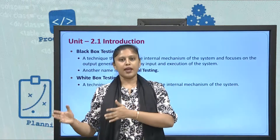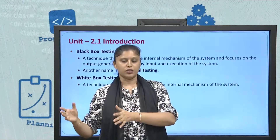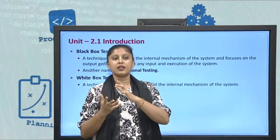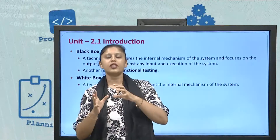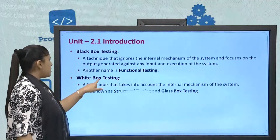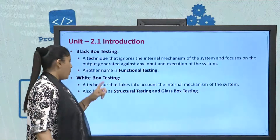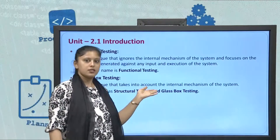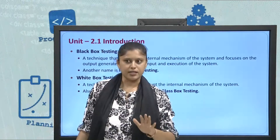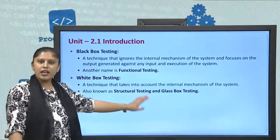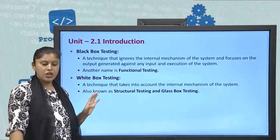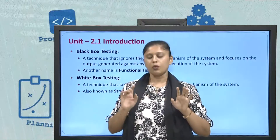The major difference between both types of testing is: black box testing is external only and does not look into the logical part, while white box testing checks the internal code — the conditional statements used, whether there is a better way to include functionalities. A second difference is naming: black box testing is also known as functional testing, while white box testing is also known as structural testing or glass box testing.